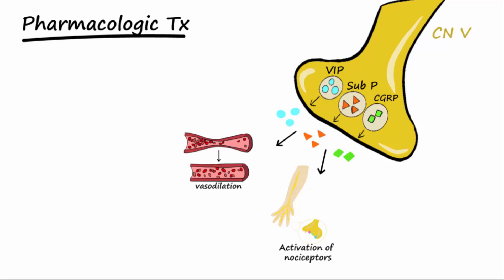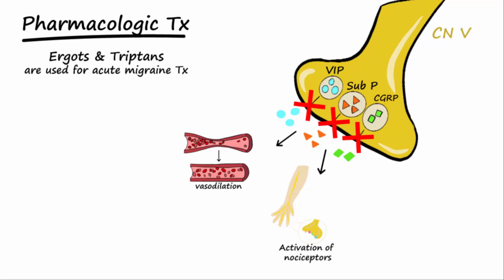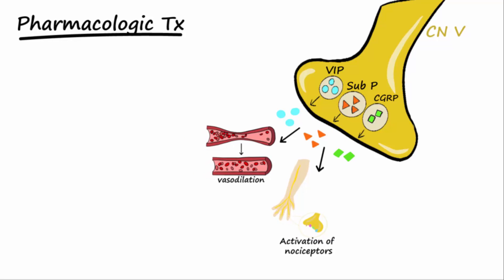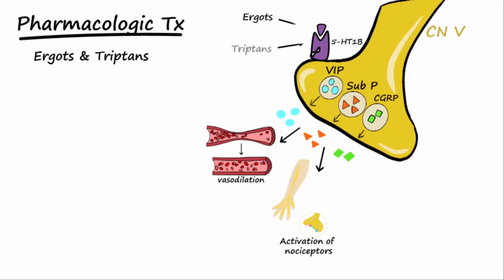Pharmacologic treatment of acute migraines using ergots and triptans acts to decrease or inhibit the release of neuropeptides from cranial nerve 5. This action will decrease the inflammation neuropeptides cause, including decreasing cerebral vasodilation and decreasing pain. Ergots and triptans cause this decreased neuropeptide release by activating 5-HT1B and 5-HT1D presynaptic autoreceptors. When these autoreceptors are stimulated, the release of neuropeptides is inhibited.